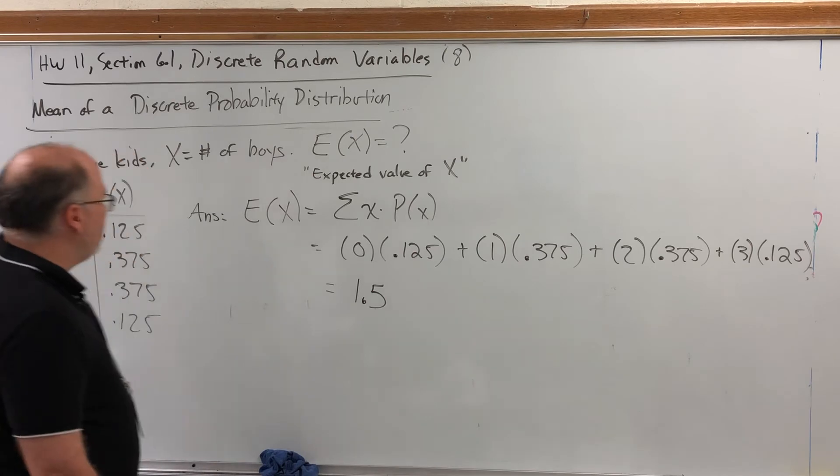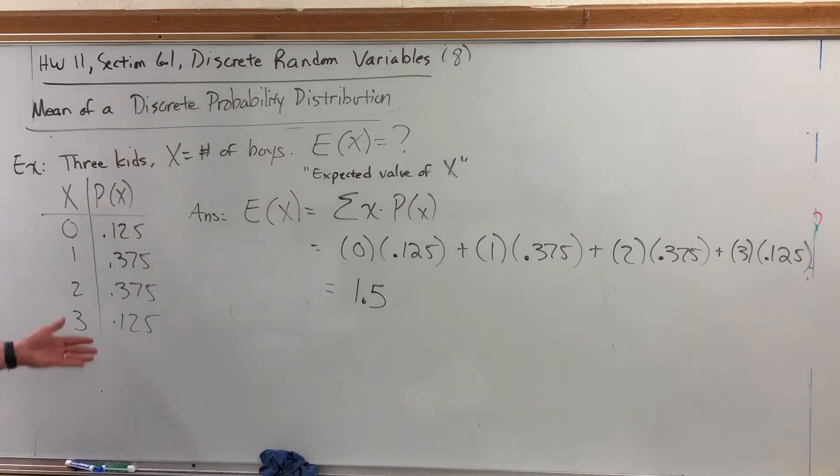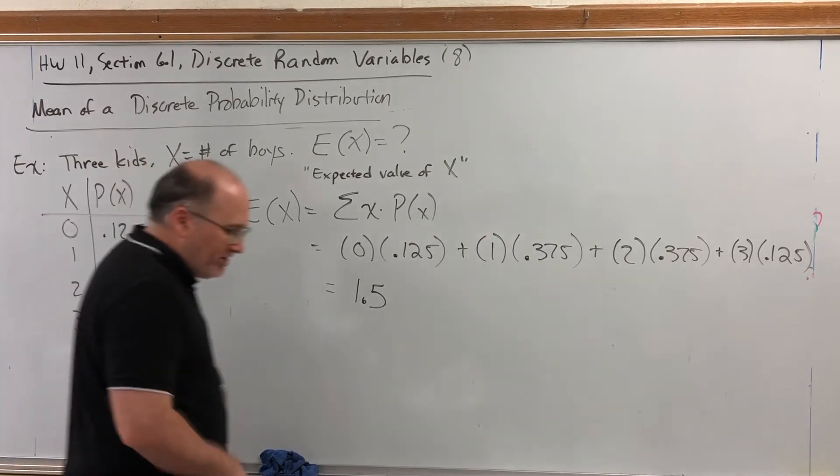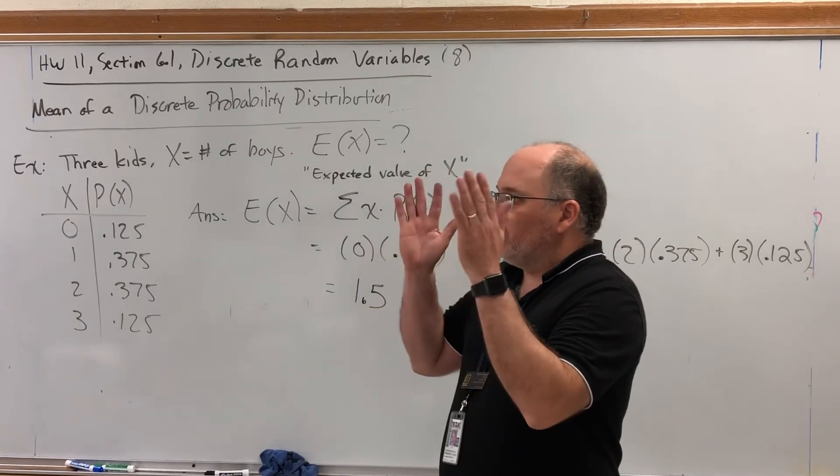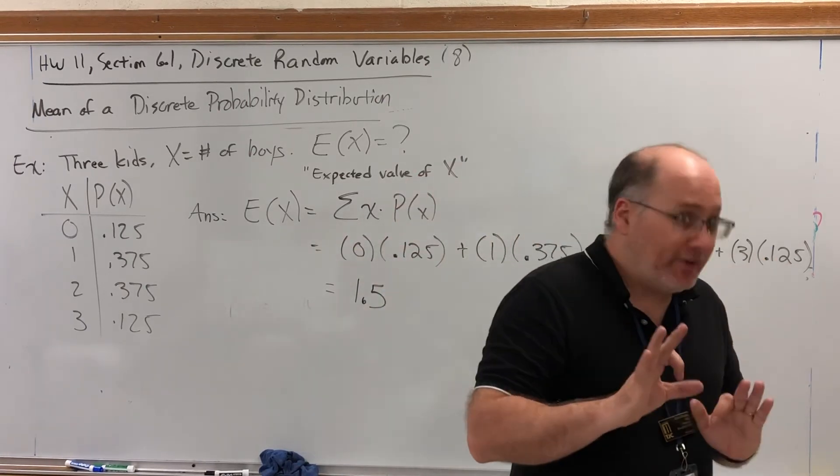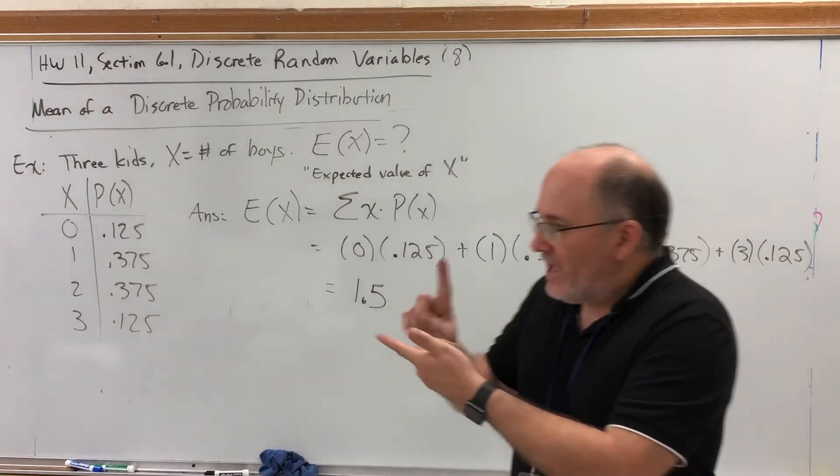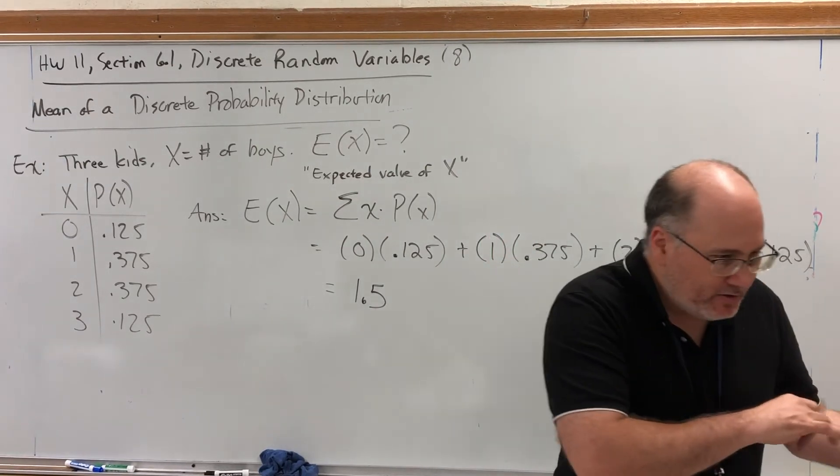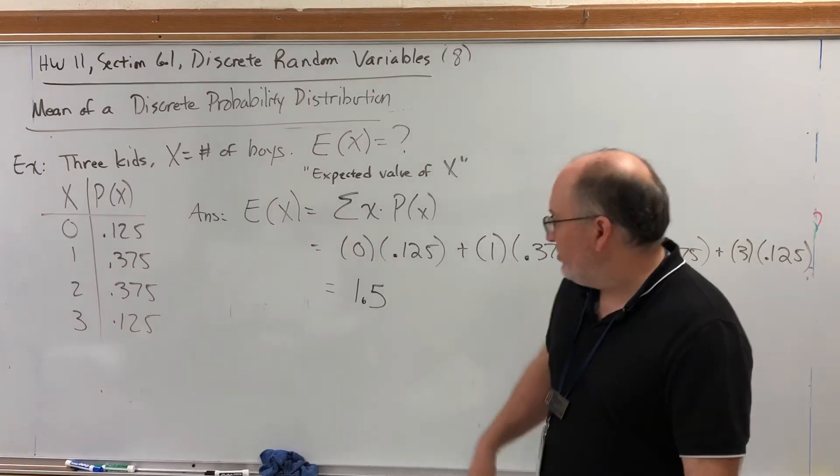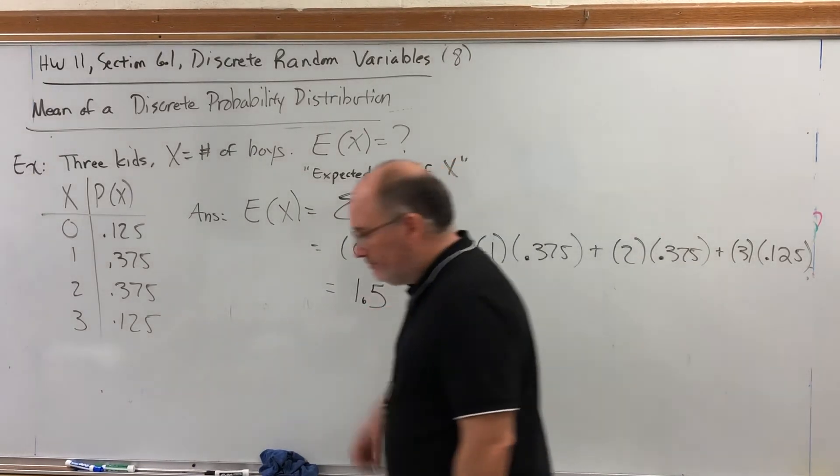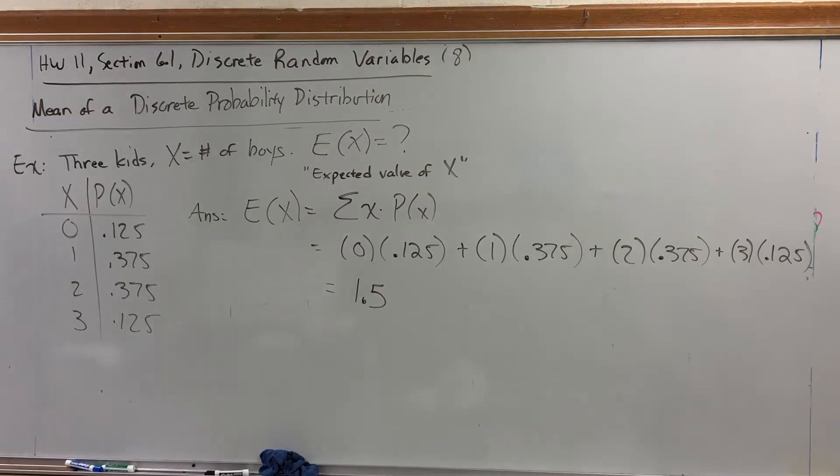So, our intuition is confirmed by the math that says, if you have three kids, on average, you would expect 1.5 boys. Again, that doesn't mean one family is going to have 1.5 boys and 1.5 girls. That means if we took all the families with exactly three kids and wrote down how many boys each one had and averaged them, the more times we do that, the closer that number we'll get to 1.5.